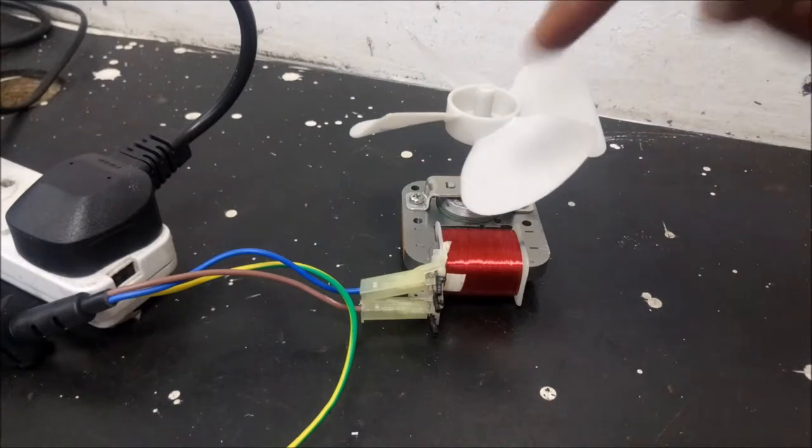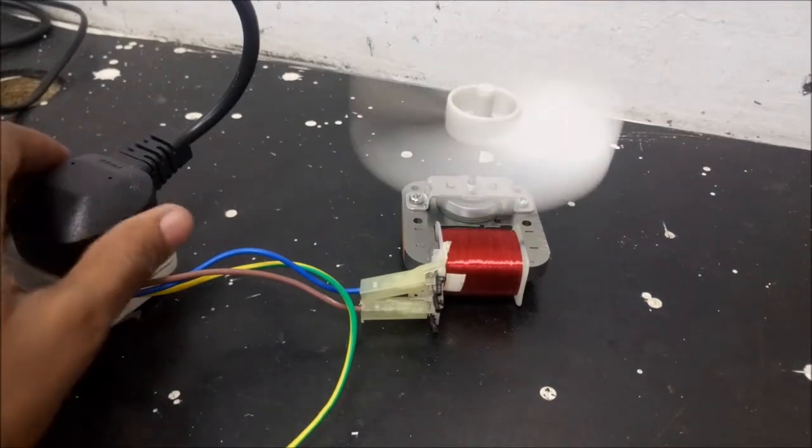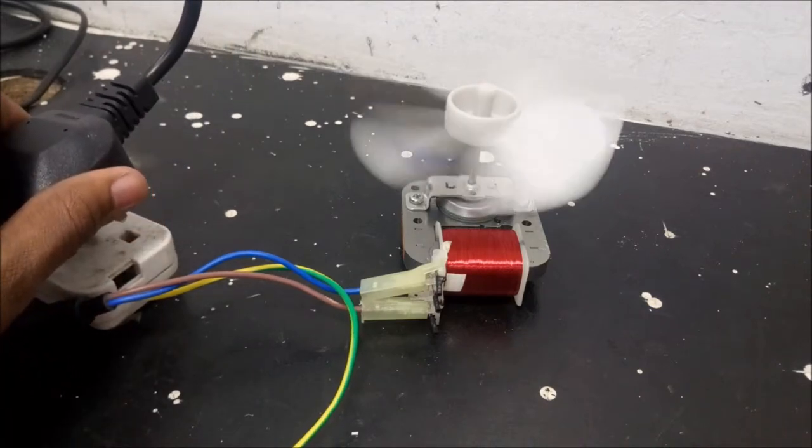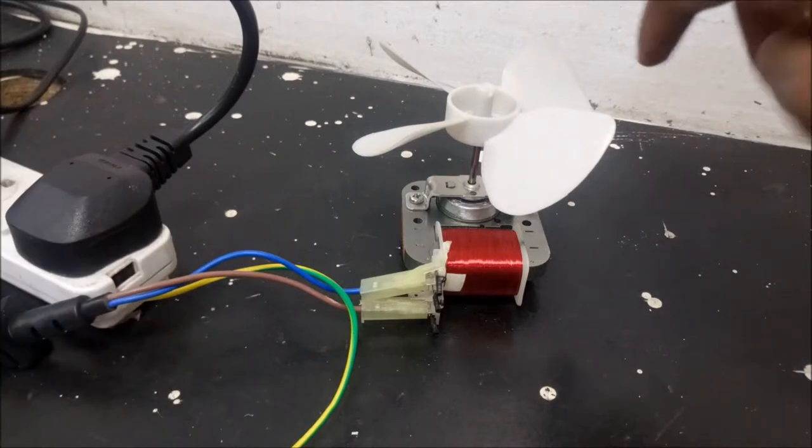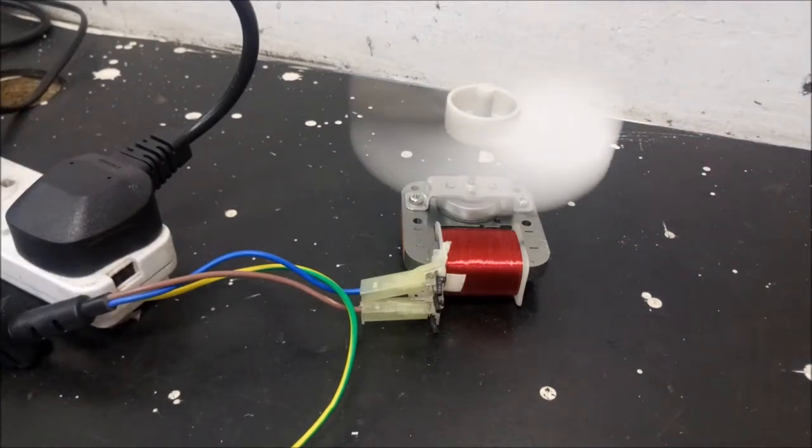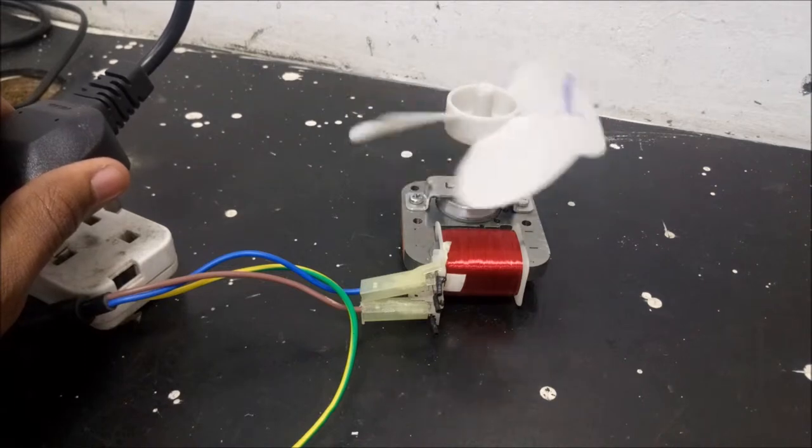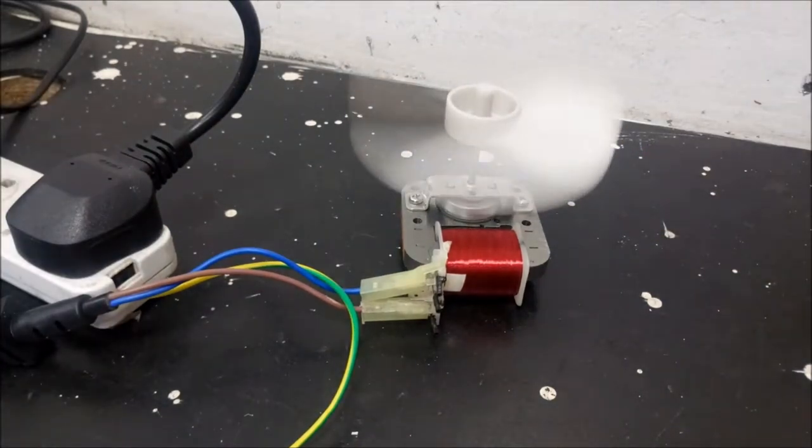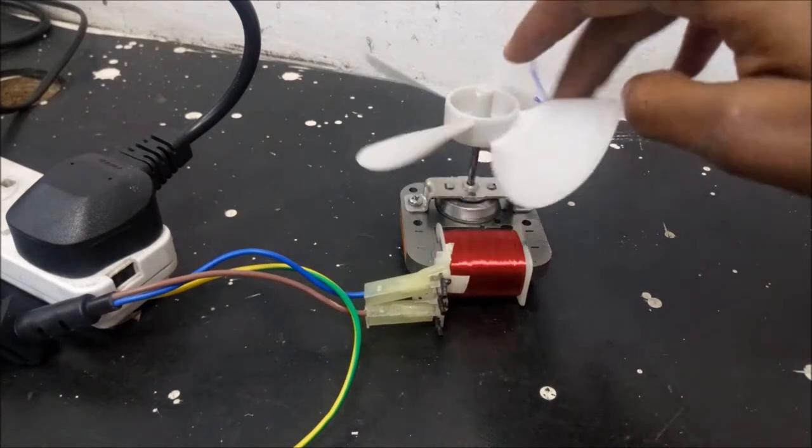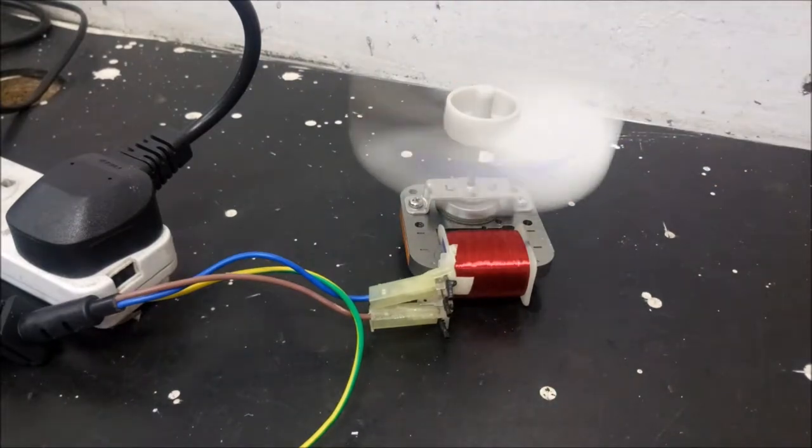So without the shaded pole, this motor is not self-starting. You must give it a push so that it starts rotating in the direction you want. Right now it's rotating in the anticlockwise direction. Then I start it again in the other direction and it will keep rotating in that direction until I remove the power. It's also a very weak motor because I can stop it with my fingers. Then I rotate it in the other direction and it will start rotating in the other direction.